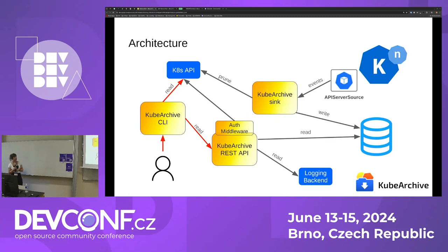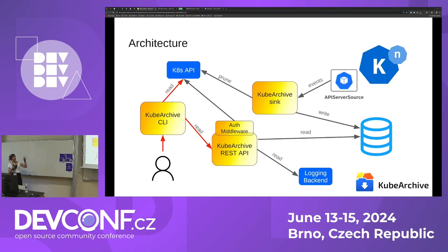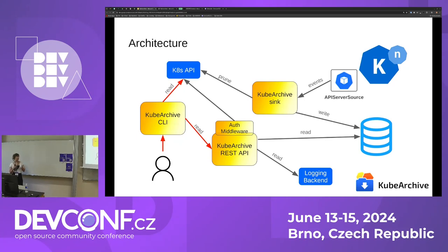Next item is the CLI. Of course, users can also request directly to the REST API, but this is different from how kubectl works with the Kubernetes API, because the kubearchive CLI is going to provide additional value — it's going to also make requests to the Kubernetes API to provide this integrated view of resources stored in etcd and outside of etcd.